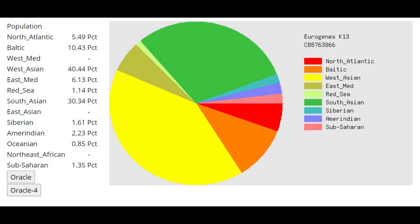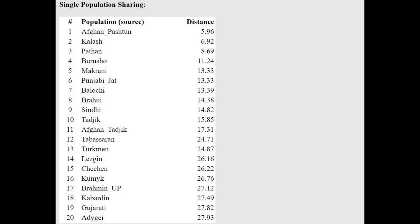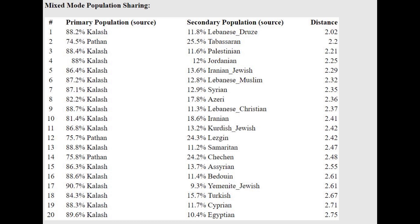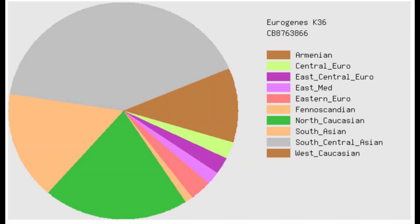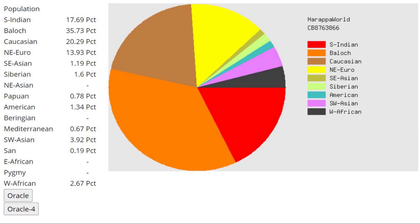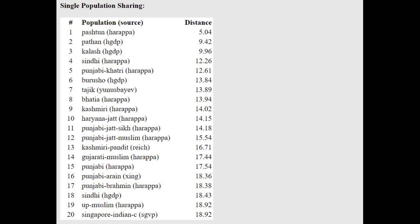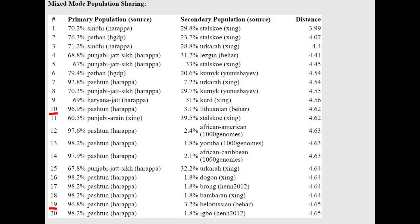Moving on to his GED-match results: with Eurogenes K13, the Oracle places him closest to Pashtuns from Afghanistan, modeled as a mixture of Pakistan and Afghanistan groups with Northern Caucasus groups. With Eurogenes K36, the majority components are South Asian, South Central Asian, North Caucasus, and West Caucasus. With the Harappa World Calculator — said to be the best for South and Central Asia — he is closest to Pashtuns and can be modeled as Pashtun plus a little North European, such as Belarusian or Lithuanian.